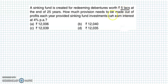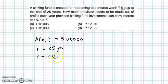We have to accumulate Rs. 5 lakhs. So 5 lakhs is the accumulated value, which we denote as A(n,i). This is 500000. Now we have to accumulate 25 years, so n is equal to 25 years.